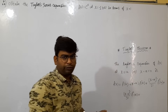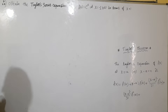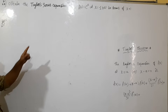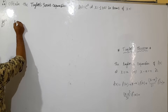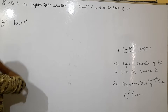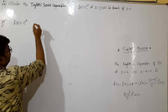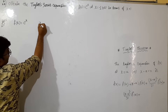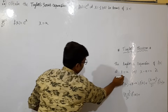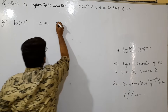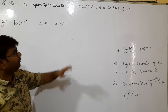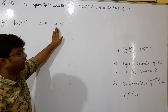First question — solution. f(x) equals e to the power of x. We identify the value: x equals a, so a equals minus 1. We know the Taylor series formula, so we apply it with a equals minus 1.